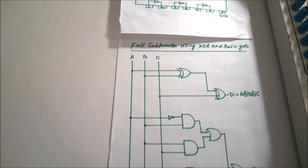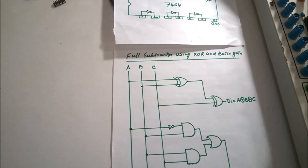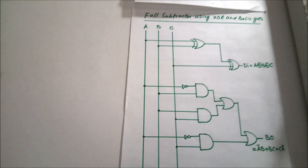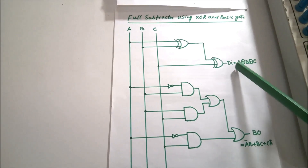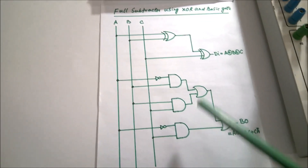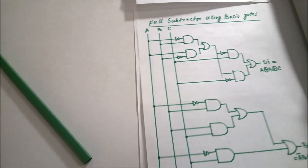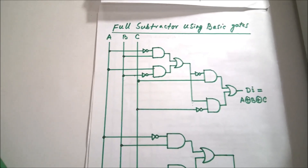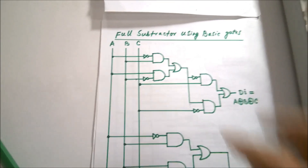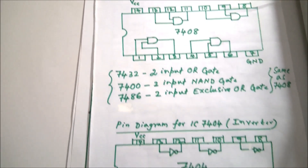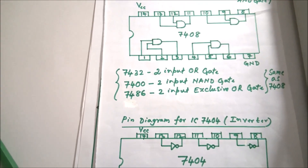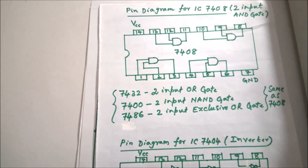Now I will show the implementation of the full subtractor using basic gates with the digital trainer kit. I have used the XOR gate here first, and after the design we got the circuit. The conversion from XOR gate to basic gates is simple. We will use ICs 7408 (AND), 7404 (NOT), and 7432 (OR). Here is the pin diagram.